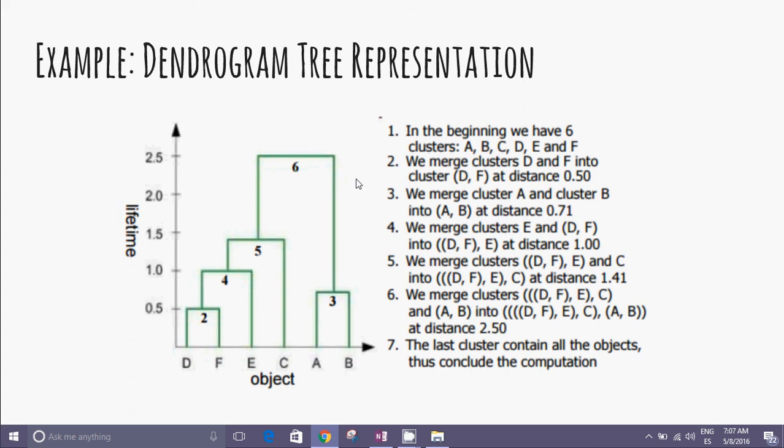As the red squares we have defined, Step 1: in the beginning we have six atomic clusters, A, B, C, D, E, F. In step 2, we merge clusters D and F into the cluster D-F at distance 0.5.